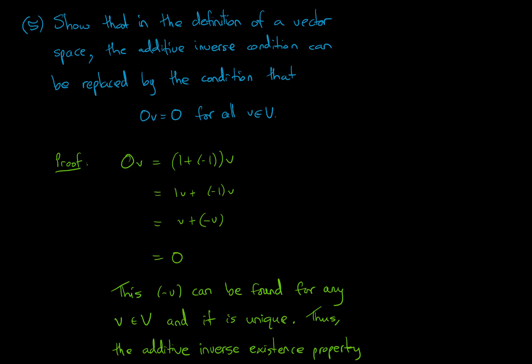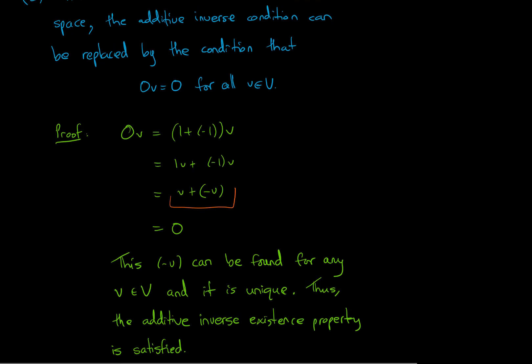So 0v is the same thing as (1 + (−1))v. And using the distributive property, we get down to v + (−v) = 0. So this means that −v can be found for any such vector v. And it is unique. So the additive inverse existence property is satisfied.